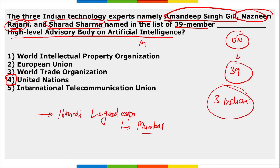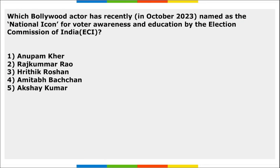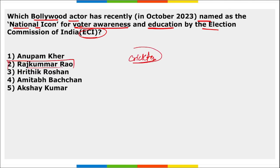Rabi Mahabhiyan was organized by the state of Bihar. Regarding national icons for voter awareness by the Election Commission of India: if asked for a Bollywood actor, the answer is Rajkumar Rao; if asked for a cricketer, it is former cricketer Sachin Tendulkar.